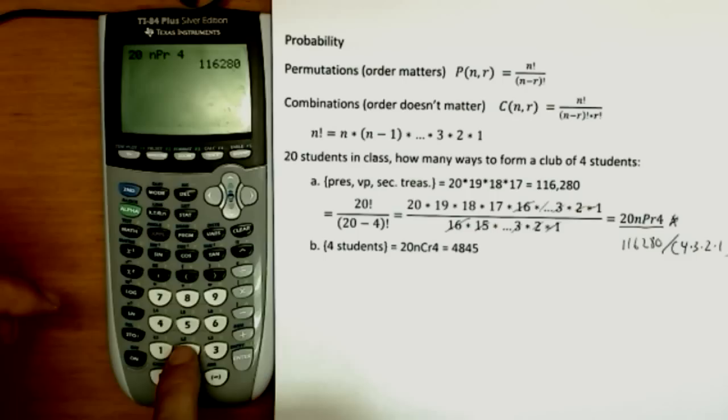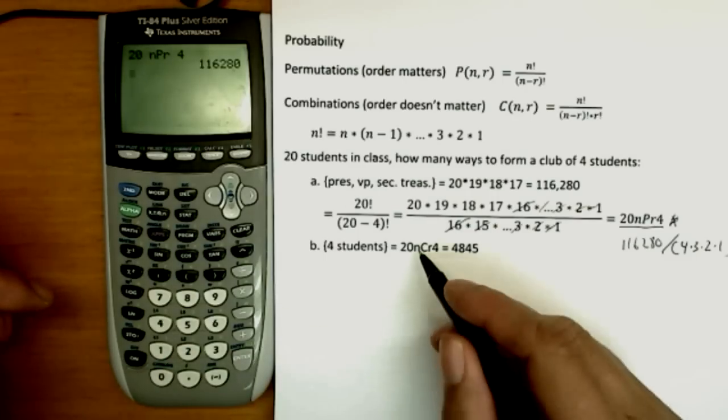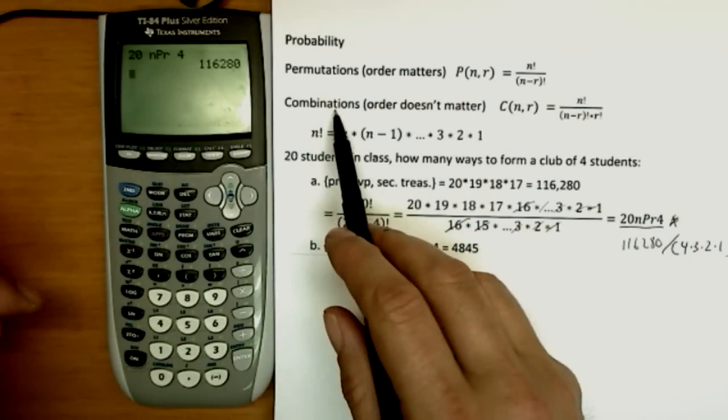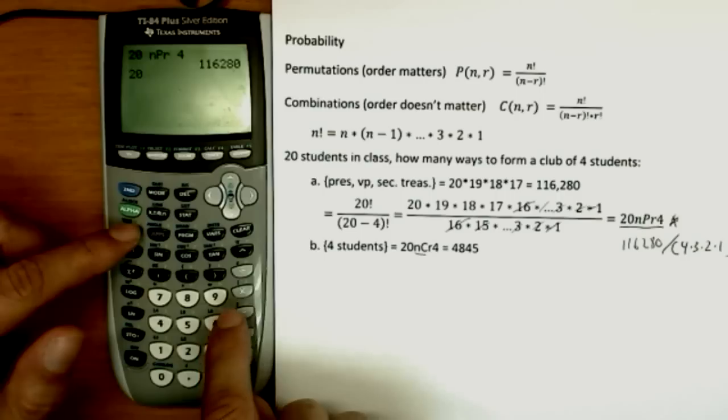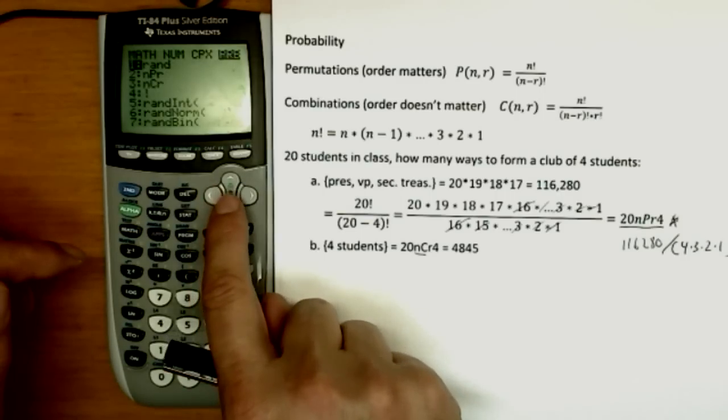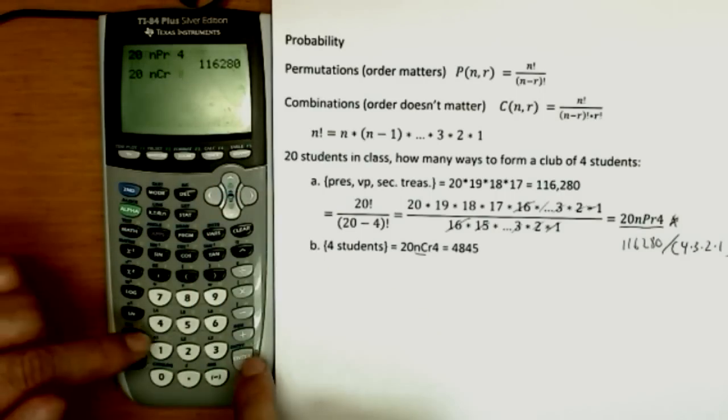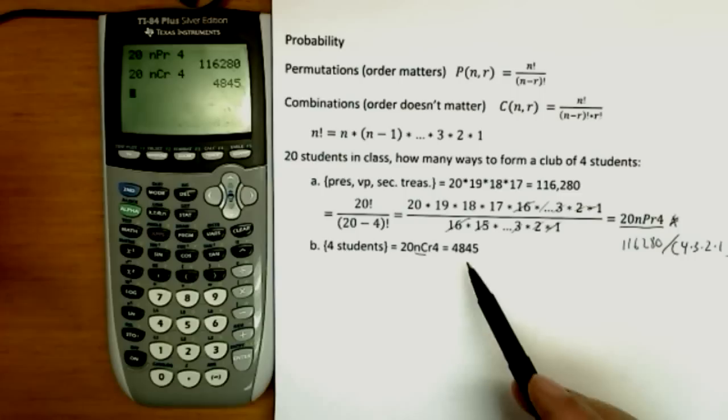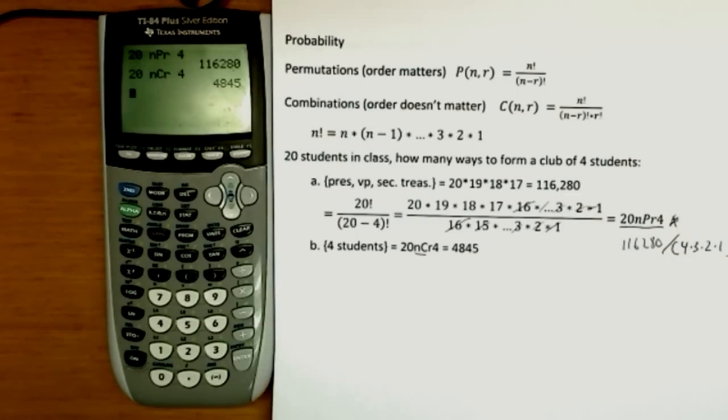But on our calculator, we can calculate it as 20 NCR, remembering that the C combinations, the order doesn't matter. So 20, math, over to probability, down to NCR, 4. And we enter that and we get 4845, as we suspected.